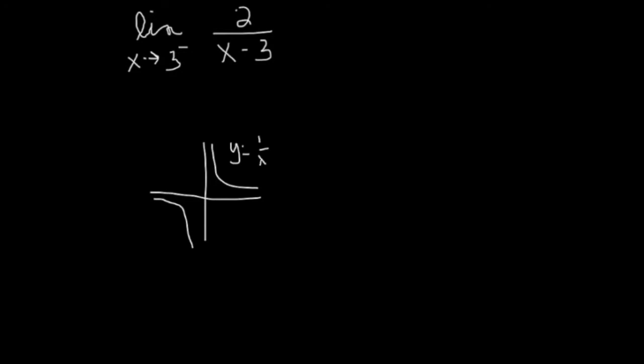This is 1 over x. If I replace x goes to x minus 3, the graph is going to be shifted to the right, 3 units. Something like that. Multiply times 2. Amplifies the height of the function times 2. It's a little taller. By taller on the negative side, I mean more negative.